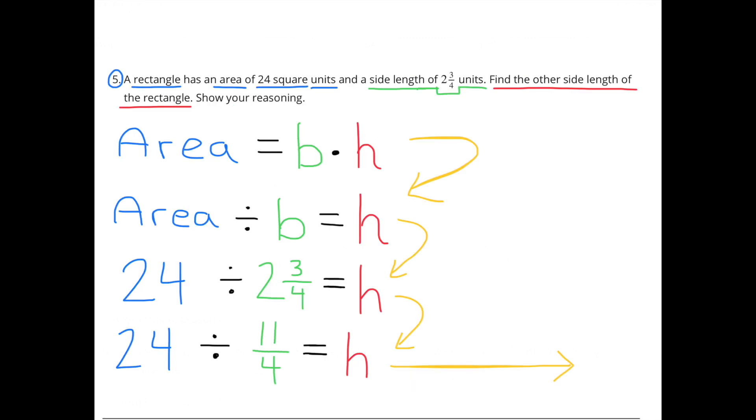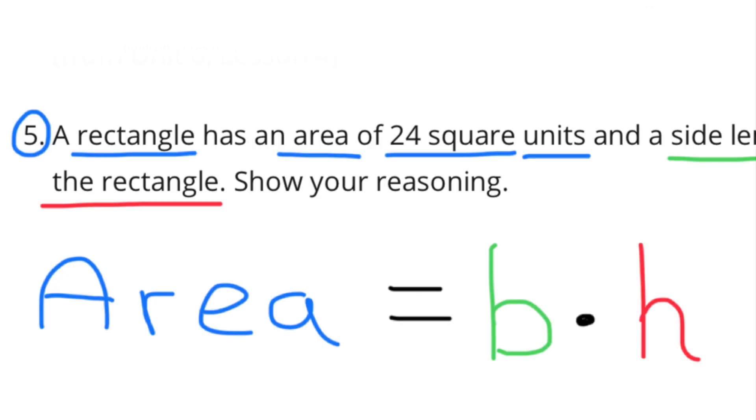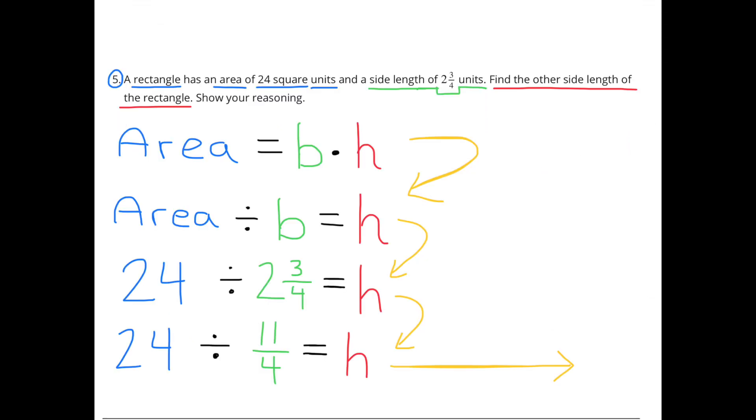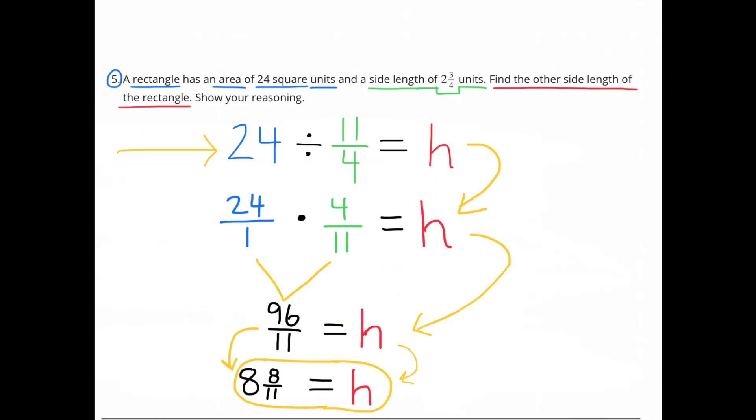Number 5. A rectangle has an area of 24 square units and a side length of 2 and 3-fourths units. Find the other side length of the rectangle. Show your reasoning. Well, I know the area is equal to base times height. We can find the missing side length by dividing the area by the known side length. So area divided by base will give us the unknown side length. 24 divided by 2 and 3-fourths can be rewritten as 24 divided by 11-fourths. 24 divided by 11-fourths can be done by multiplying by the reciprocal of 11-fourths. 24 times 4-elevenths equals 96-elevenths. So the missing side length is 96-elevenths, which can be rewritten as 8 and 8-elevenths. The missing side length is 8 and 8-elevenths units.